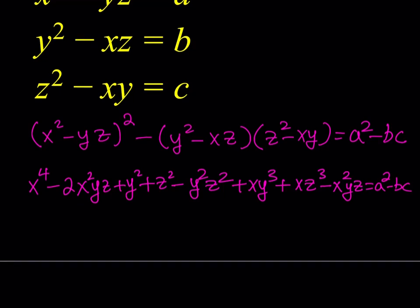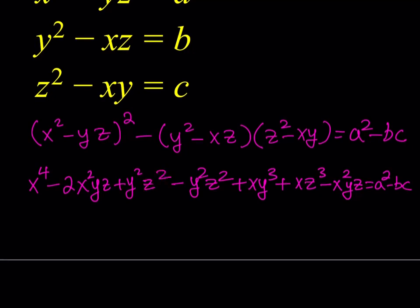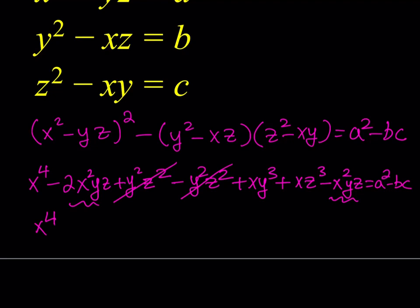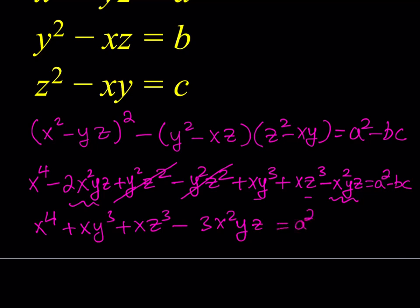The Y squared Z squared terms cancel out. These two X squared YZ terms are like terms, so combining them gives negative 3X squared YZ. Writing it all together: X to the fourth plus XY cubed plus XZ cubed minus 3X squared YZ equals A squared minus BC.